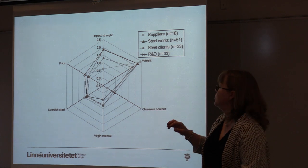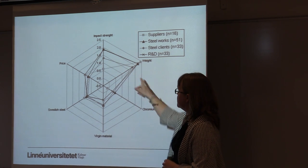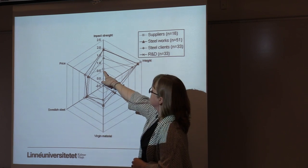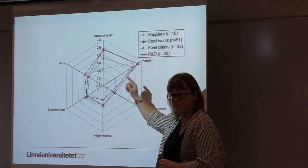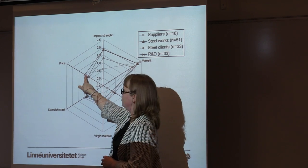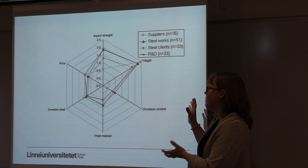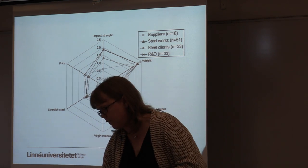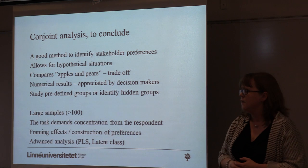Here's a glimpse of how the results can look. Weight was the most important factor for almost all groups. This should have been connected to impact strength, but it wasn't really — you can see the suppliers ranked impact strength quite low, not feeling it was important when buying a container, which they really should have. Chromium content, virgin material, Swedish steel, and price were quite low in comparison. Impact strength and weight were the most important ones. The researcher needs to define the factors in advance, and knowing which ones are the important factors is the tricky part.